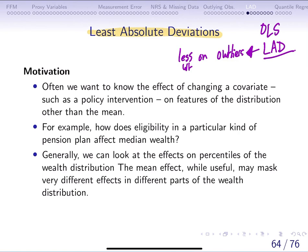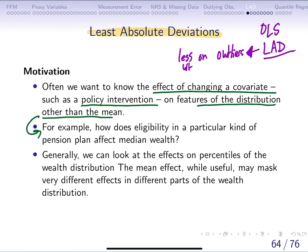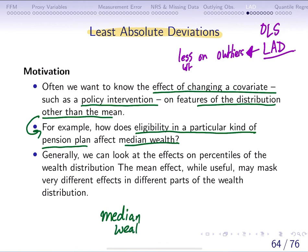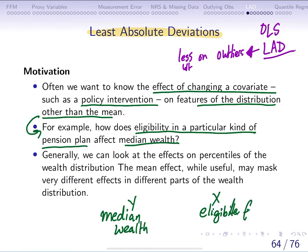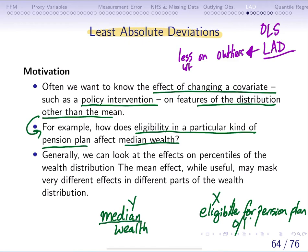Let's think about an example. If we want to examine what is the effect of changing a covariate or explanatory variable, sometimes we are interested in policy interventions on features of the distribution other than the mean. For example, maybe we want to understand how eligibility in a particular pension plan affects median wealth. So Y is median wealth, and X is eligibility — whether you're eligible or not for a pension plan — which is a zero-one or dichotomous variable. We might be interested in not the average wealth, but the median wealth.